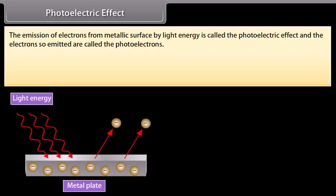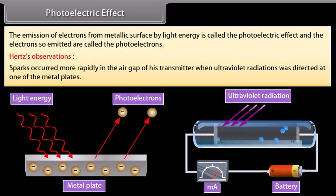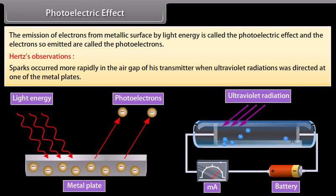The emission of electrons from a metallic surface by light energy is called the photoelectric effect, and the electrons so emitted are called photoelectrons. Hertz observed, while performing an experiment for production of electromagnetic waves by spark discharge, that sparks occurred more rapidly in the air gap of his transmitter when ultraviolet radiation was directed at one of the metal plates. Hertz could not explain these observations, but other scientists explained that the cause was the emission of electrons from the metal plate due to incidence of high frequency light - this is the photoelectric effect.